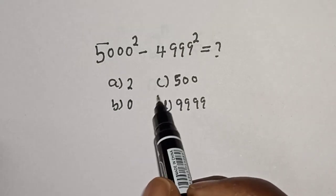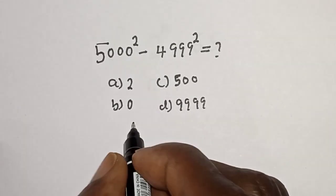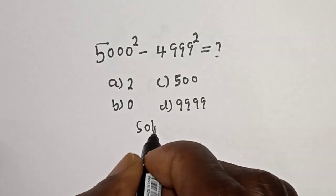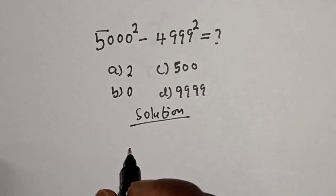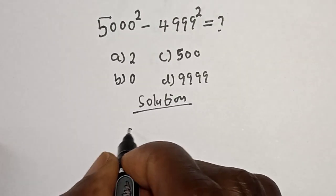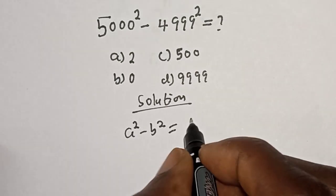Let's see what the answer will look like, but before we proceed please don't forget to like, share, comment and subscribe. Solution: take note of this exponential rule that if you have a square minus b square, this is equal to a plus b multiplied by a minus b.